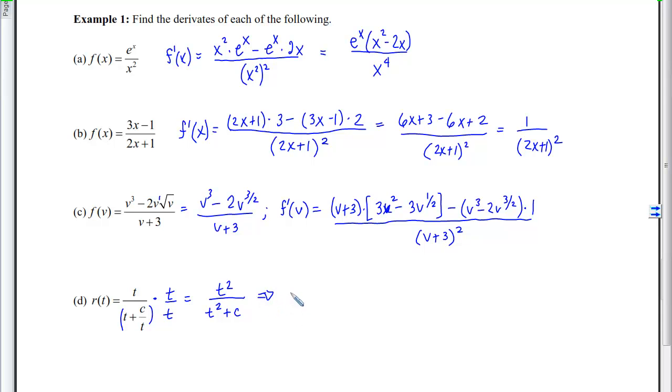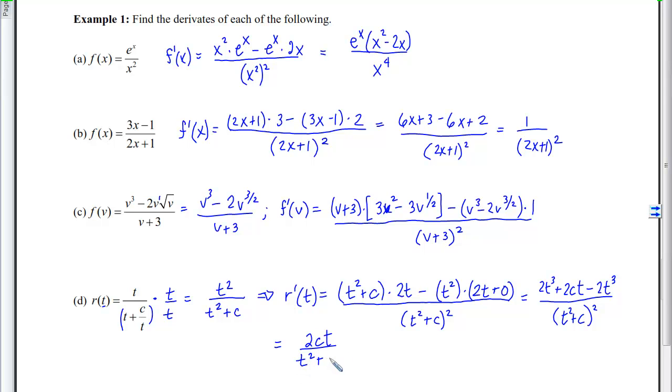Now if I want to take the Derivative, I will get R prime of t will be Low D High minus High D Low. Notice here that c will be treated as a constant because we are differentiating with respect to t. So this will become the 2t and the c will disappear. There is Low D High minus High D Low over Low squared. If I simplify, I have 2t cubed plus 2ct minus 2t cubed all over (t squared + c) quantity squared. The 2t cubed will cancel and I will have left 2ct over (t squared + c) quantity squared.